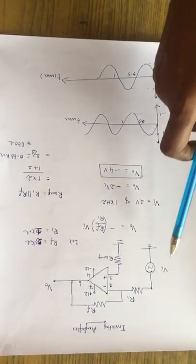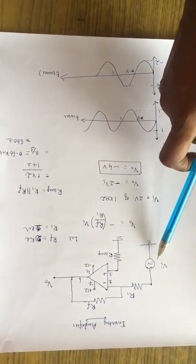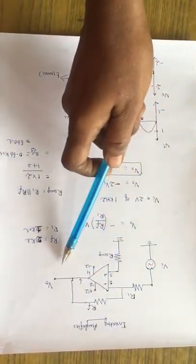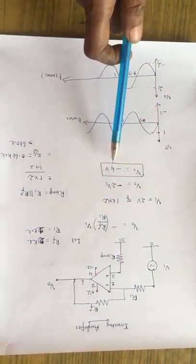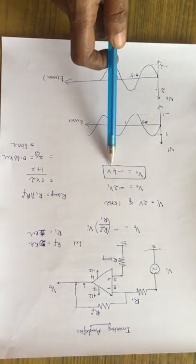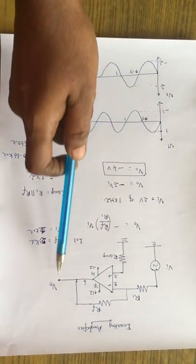Now we are applying the input voltage of 2 volts of 1 kilo hertz at the inverting terminal 2. The output voltage is the inverted voltage with 180 degree phase shift, inverted voltage of 4 volts at the output side.